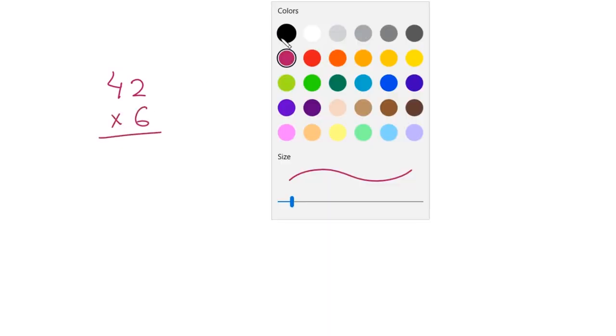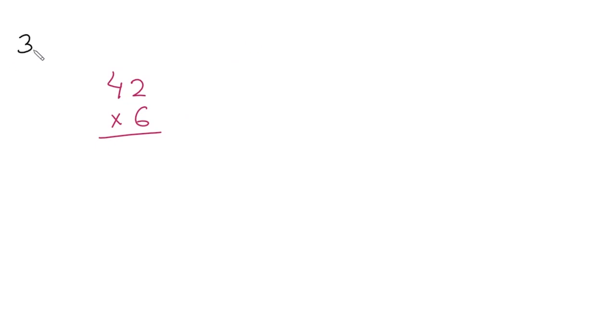Now let's move to the trick. Suppose we have to find the answer for 42 times 6. For this, there are three small steps that you have to follow. Let's start.